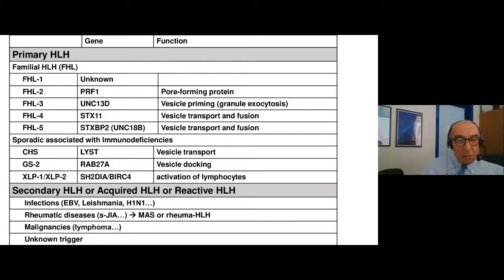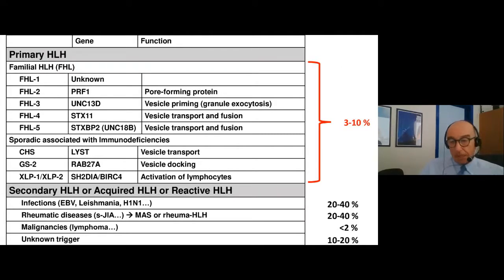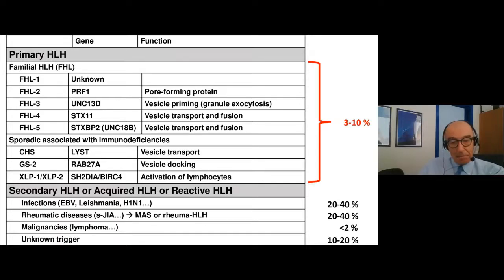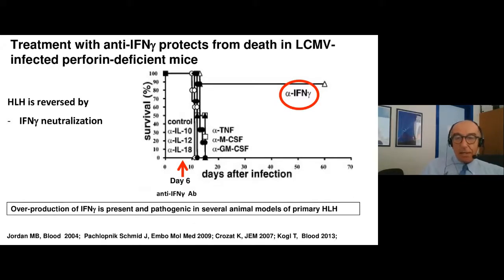We have tried to classify this group of diseases based on cause. The first group of patients are those with a monogenic disorder — very rare. Most are caused by defective genes related to pore-forming proteins, vesicle priming, vesicle transport, fusion to the membrane, or docking — all to do with cytotoxicity. Almost 20 years ago it became clear that in perforin-deficient mice, which develop HLH when infected with a virus in an invariably lethal model, if you antagonize interferon gamma the mice survived.